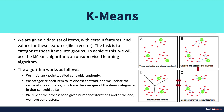Once every point decides which cluster to join, we know which cluster each point belongs to. Then, within each cluster, we calculate the mean position — the average x value and average y value — and set that as the new centroid. This new centroid can be a virtual point; it doesn't have to be a real data point. We then repeat this process.